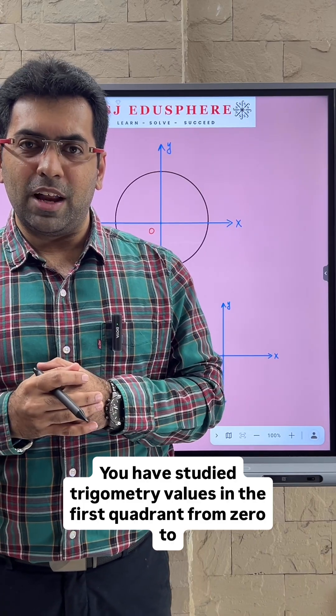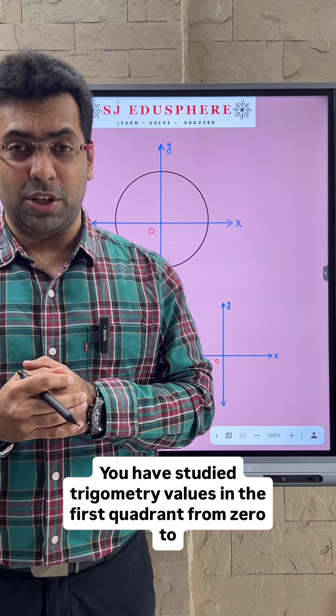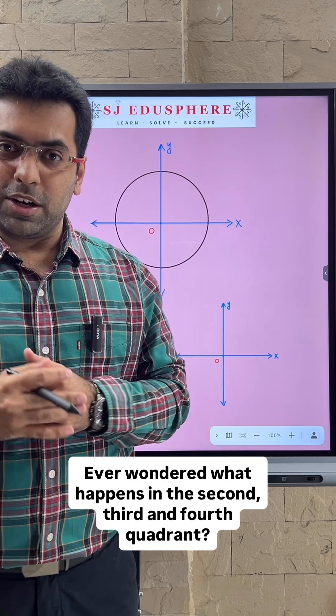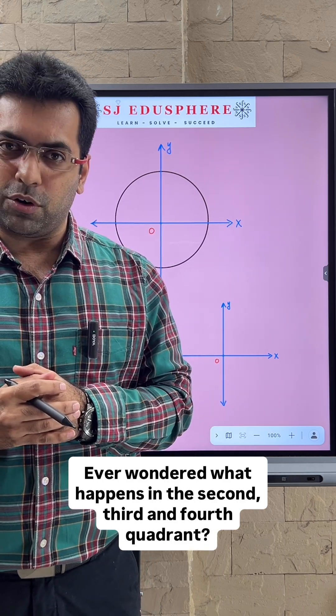You have studied trigonometry values in the first quadrant from 0 to 90 degrees. Ever wondered what happens in the second, third, and fourth quadrant?